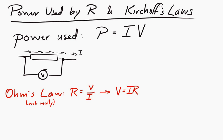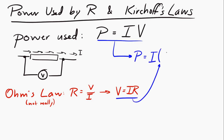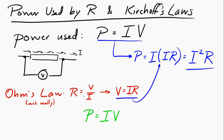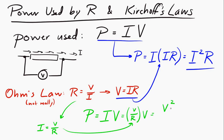So power is equal to I times V. We can replace V, the potential difference across the resistor, with the current through the resistor times the resistance. So the power used by a resistor equals the current squared times the resistance. We can also substitute I — since I equals V over R — and get that the power equals the potential difference across the resistor squared divided by the resistance.